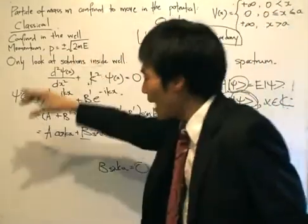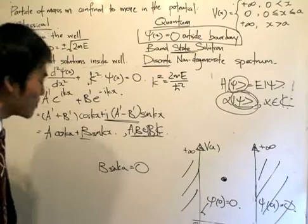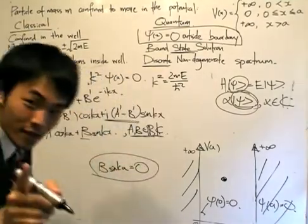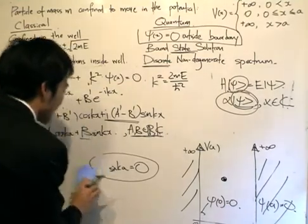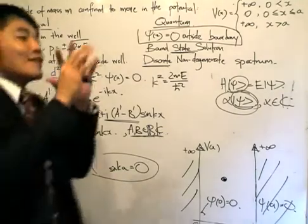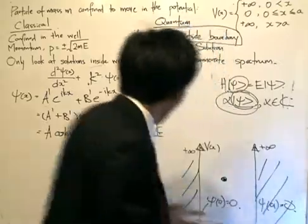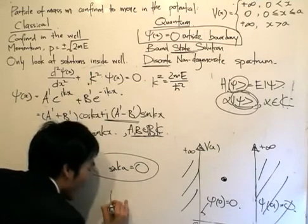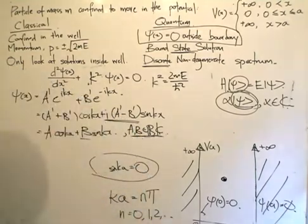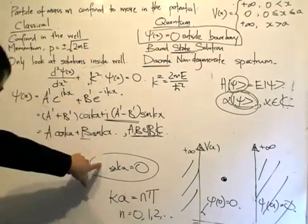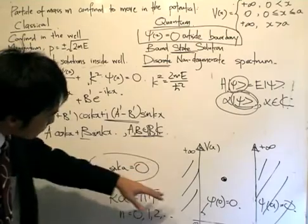We set the constant in the Schrödinger equation as k, where k² = 2mE / ℏ². But now we know there is a restriction on k, because k must obey the condition B sin(ka) = 0. Since we can't set B = 0 (that gives a trivial solution), we need sin(ka) = 0. This is solved simply by ka = nπ, so k only takes certain values: kₙ = nπ/a, where n = 0, 1, 2, 3, …